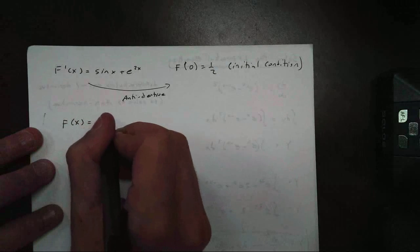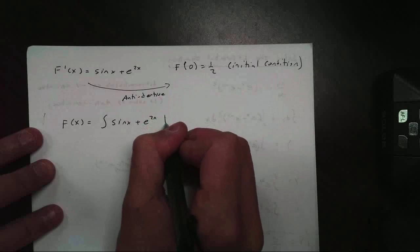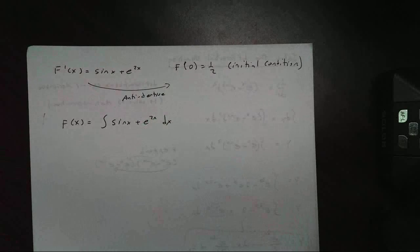So I am going to apply the antiderivative rule. To get f of x, this is just the antiderivative, sine of x, plus e to the 2x. Don't forget your dx, okay?